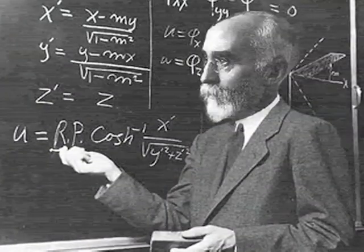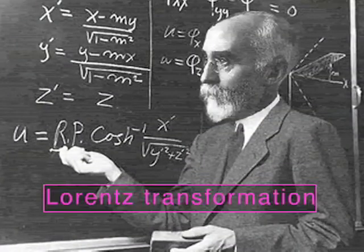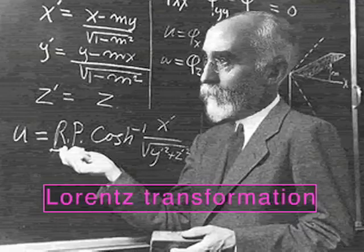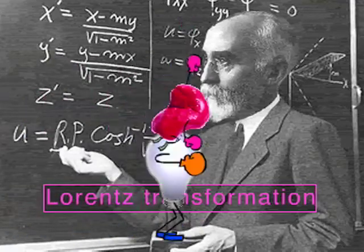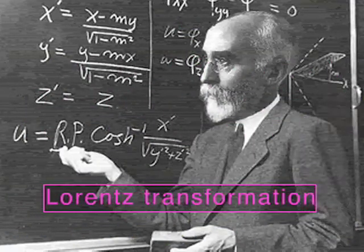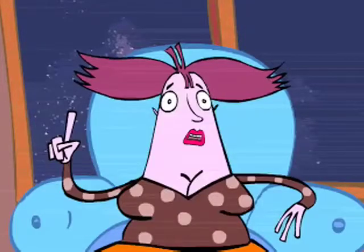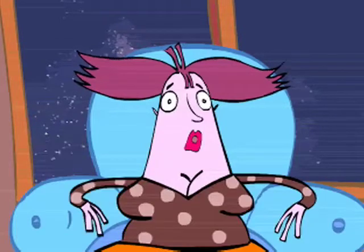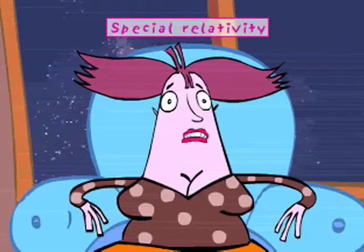The Dutch physicist Lorentz was able to harmonize it. He found a general law called the Lorentz transformation, which applies to the speed of matter and light. This is the first pillar of Einstein's theory of special relativity.